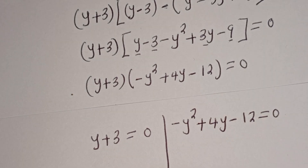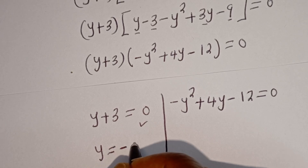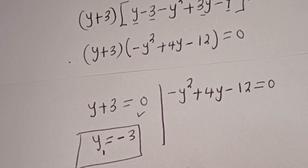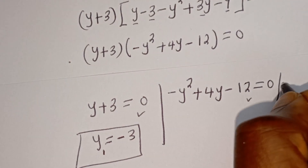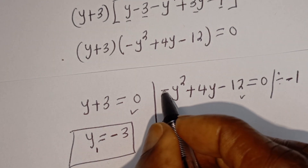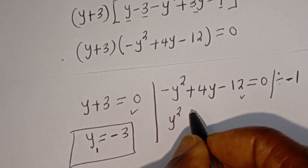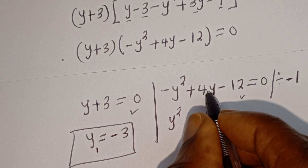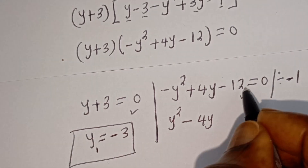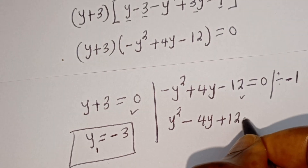From the first case, y equals minus 3. You can call this y1. From the second case, let's divide all terms by minus 1. Minus y squared divided by minus 1 becomes y squared. Plus 4y divided by minus 1 becomes minus 4y. Minus 12 divided by minus 1 becomes plus 12, equal to 0.